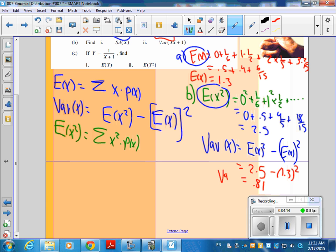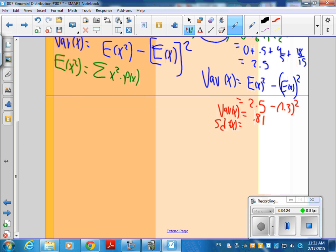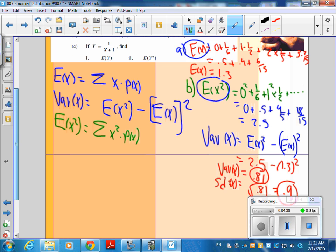Now, that's the variance. If I want the standard deviation, I just take the square root of that. And what do you get? I think you know. If it's 0.81, won't that be 0.9? Yeah. That'll be 0.9.